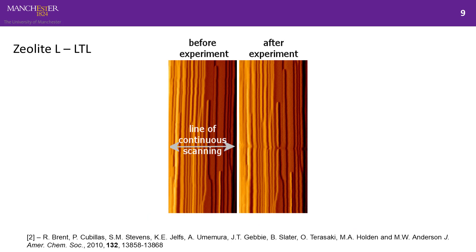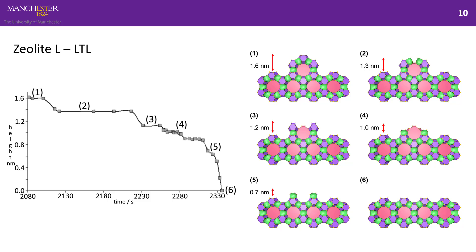In 2010, our group did AFM studies in situ on zeolite L. They scanned back and forth across one line continuously where dissolution wasn't occurring, but the AFM cantilever tip caused local dissolution. They found that the levels of dissolution as they cut through the terrace all corresponded to terminations with what we call closed cages — units where each tetrahedral atom is connected to three others (Q3). A cube is a Q3 cage. This suggested closed cages are rate-determining steps during crystal dissolution and are metastable, making them good candidates for a general building scheme.